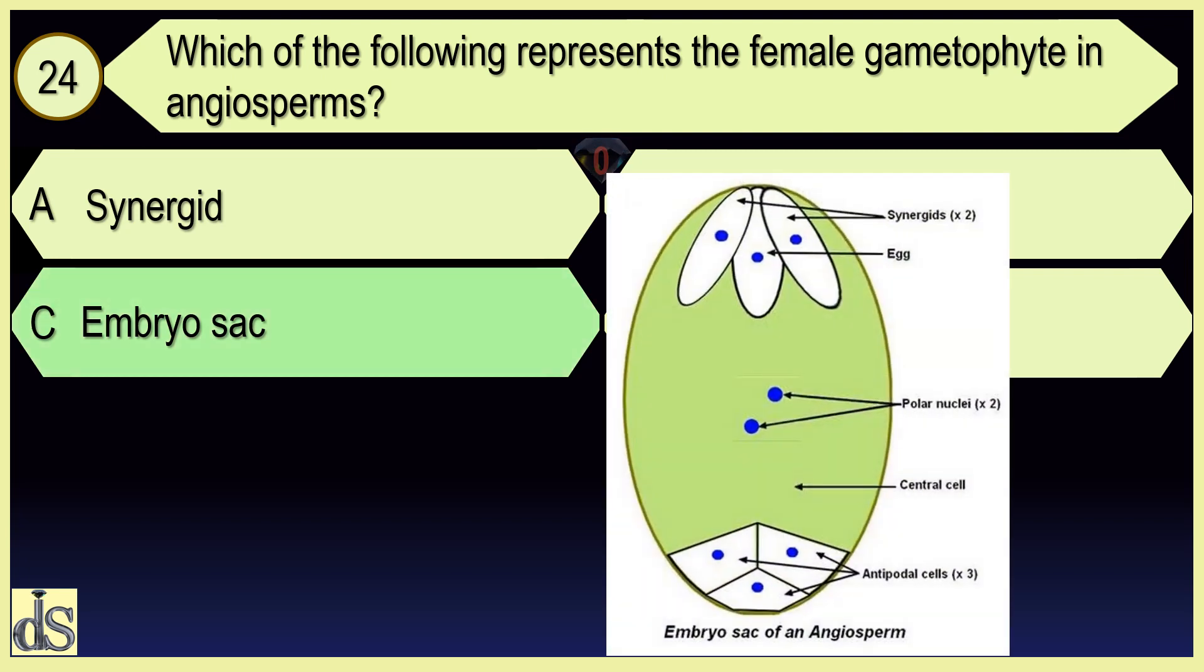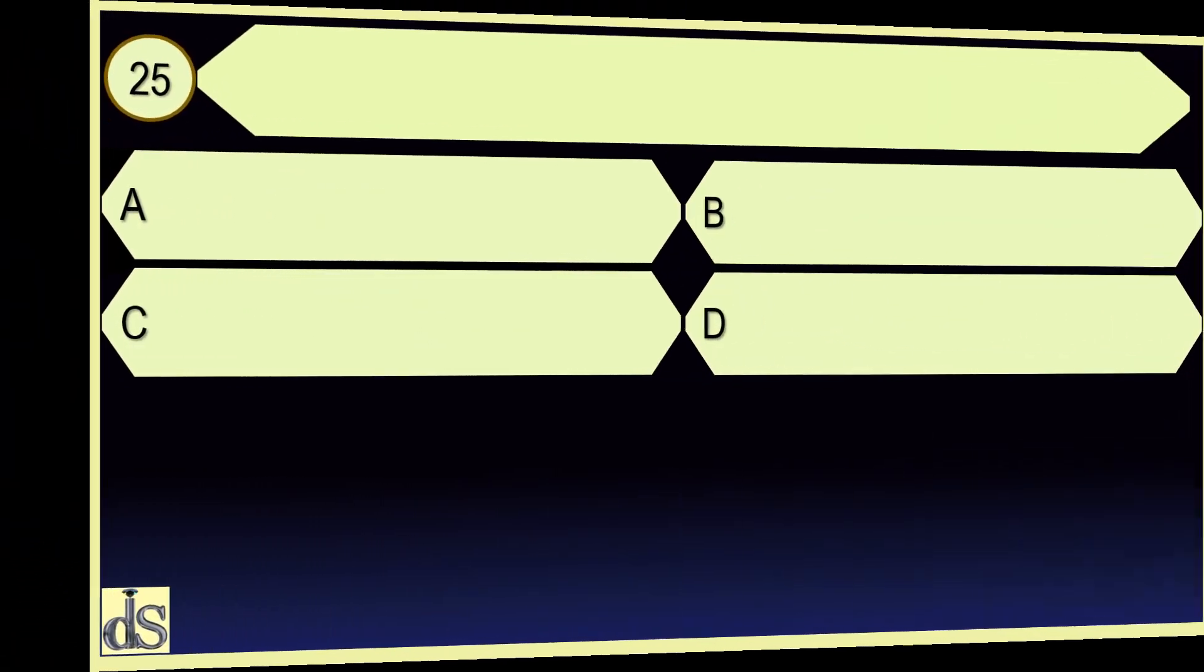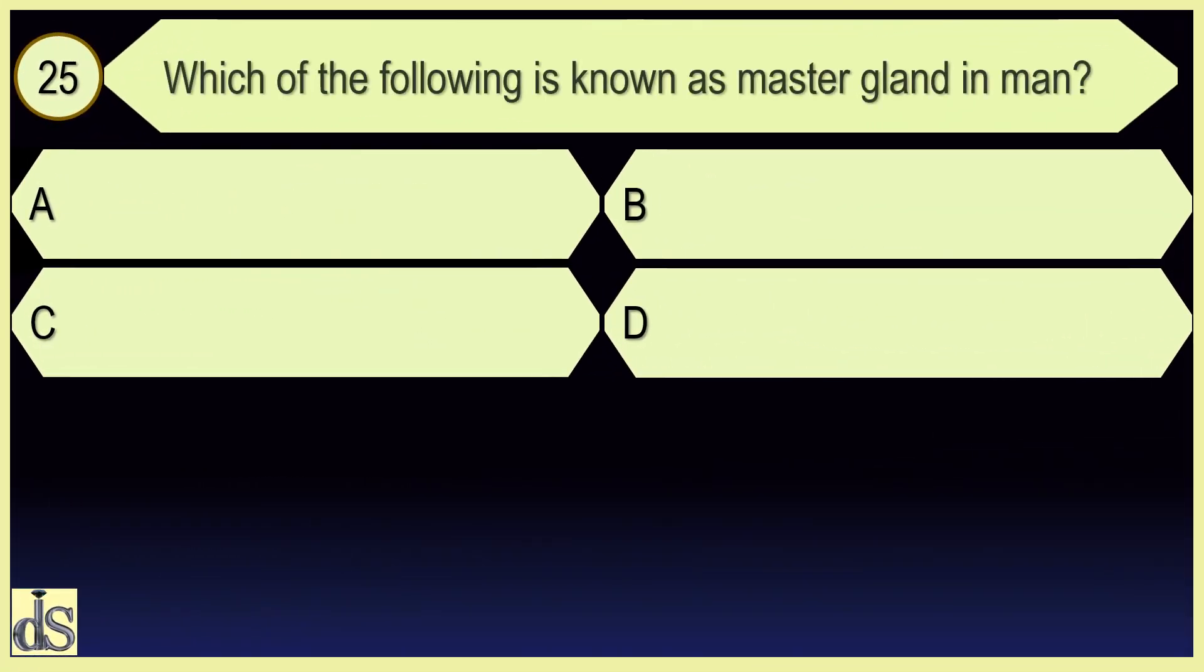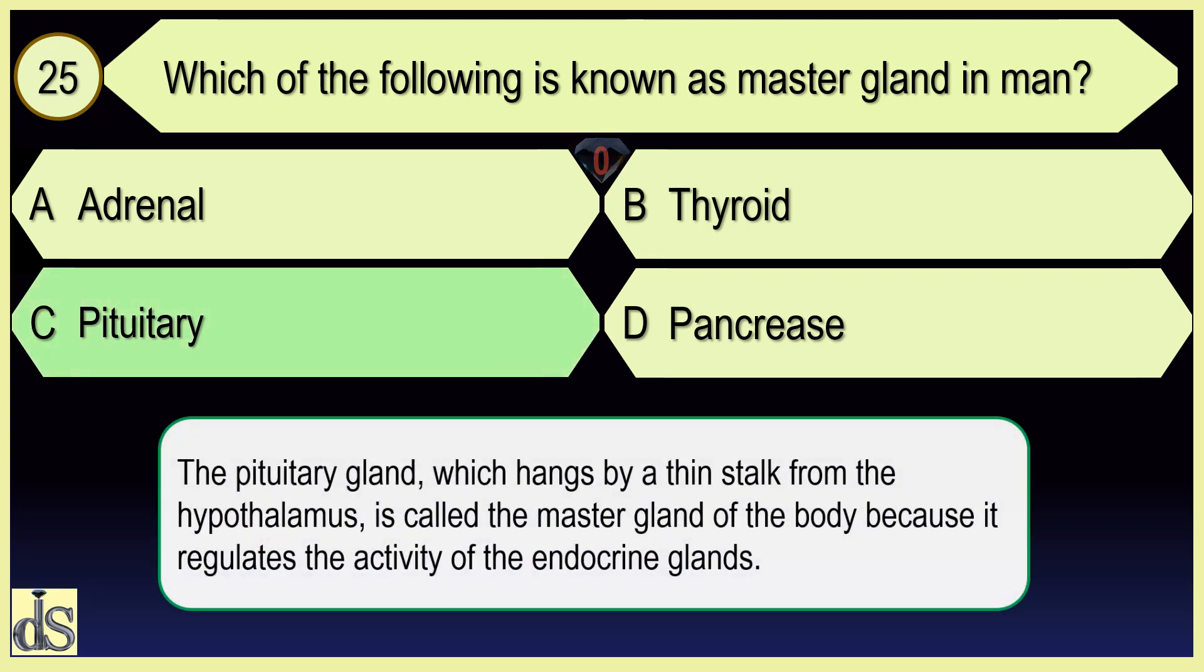Which of the following represents the female gametophyte in angiosperms? Embryo sac. Which of the following is known as master gland in man? Pituitary.